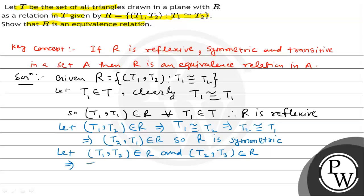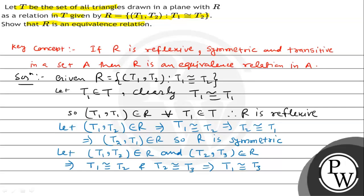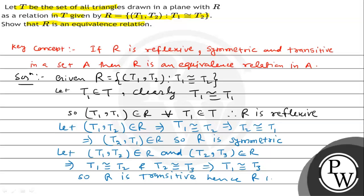Let (t1, t2) belong to R and (t2, t3) belong to R. This implies t1 is congruent to t2, and t2 is congruent to t3. That means t1 is congruent to t3 — if triangle 1 is congruent to triangle 2, and triangle 2 is congruent to triangle 3, then triangle 1 is congruent to triangle 3. So R is transitive. Since R is reflexive, symmetric, and transitive, R is an equivalence relation in set T.